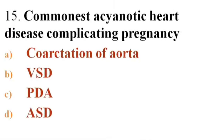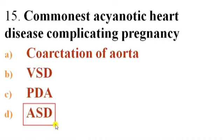Next question: Commonest acyanotic heart disease complicating pregnancy. Options: A) Coarctation of aorta, B) Ventricular septal defect, C) Patent ductus arteriosus, D) Atrial septal defect. Answer is D — Atrial septal defect. The commonest acyanotic heart disease complicating pregnancy is Atrial septal defect, and the commonest cyanotic heart disease complicating pregnancy is Tetralogy of Fallot.